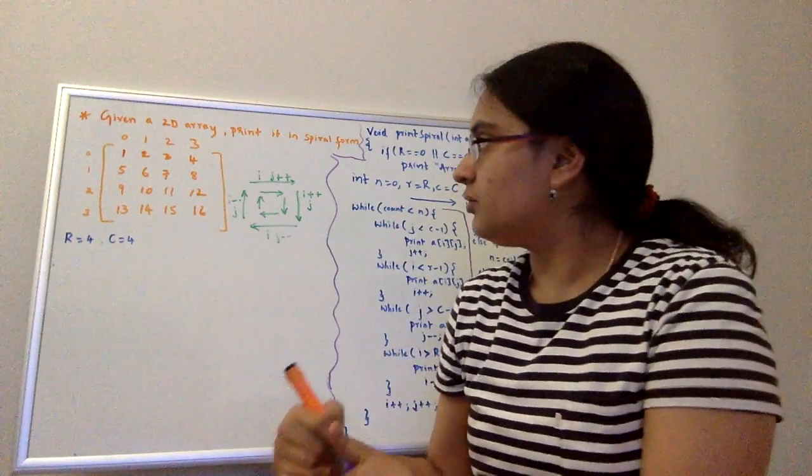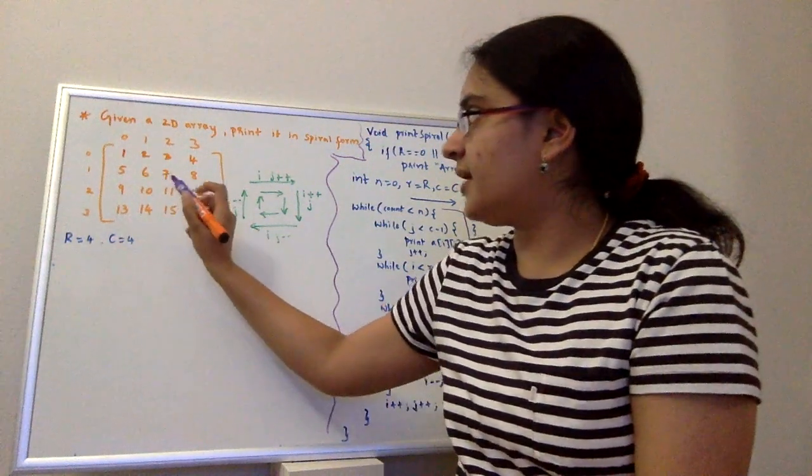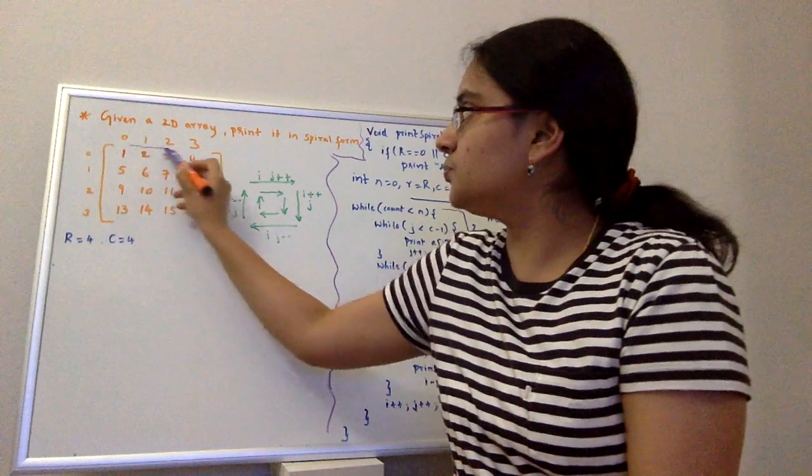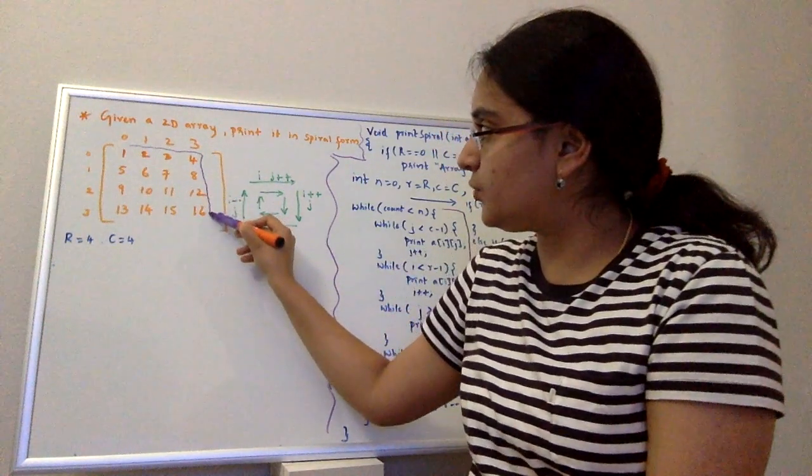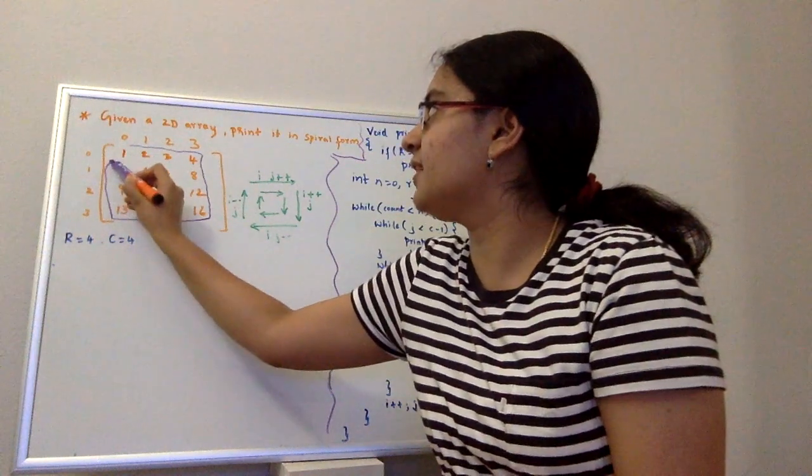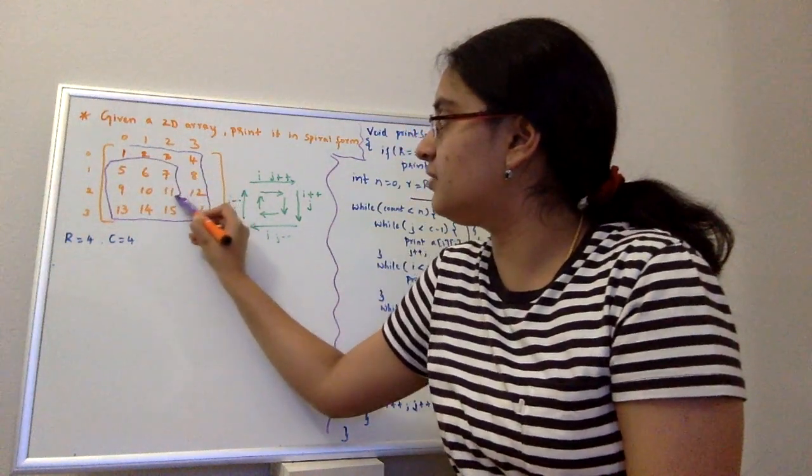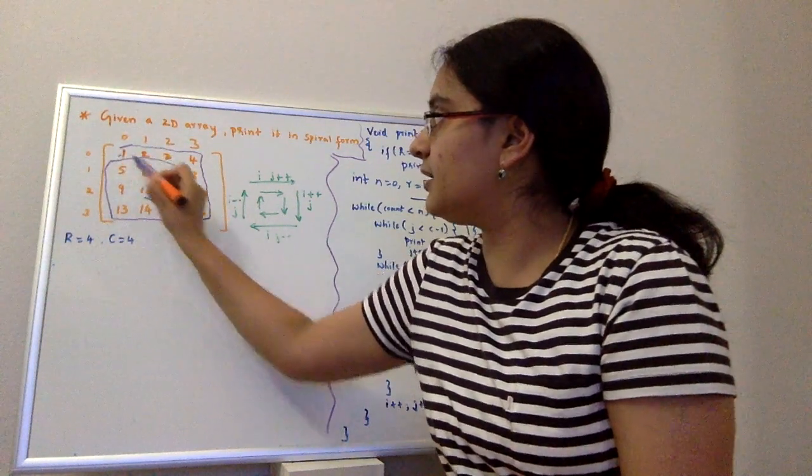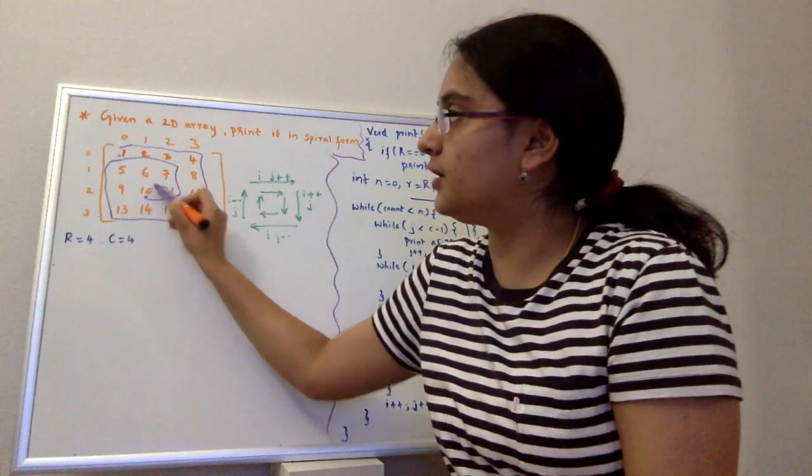Consider this example. In this 2D array I want to print numbers starting from 1, 2, 3, 4, 8, 12, 16, 15, 14, 13, 9, 5, 6, 7, 11, 10. So starting with the first element and I'm going to stop here at 10.